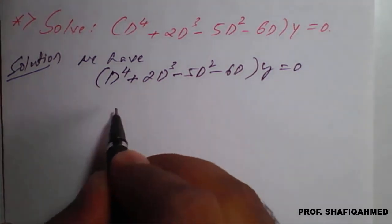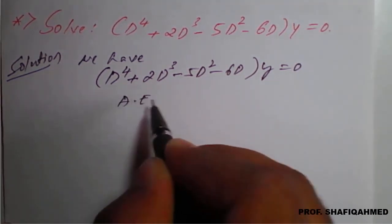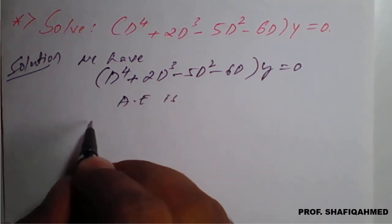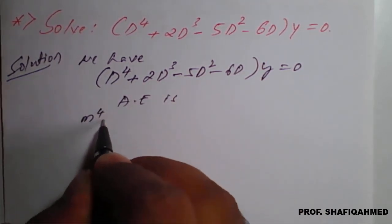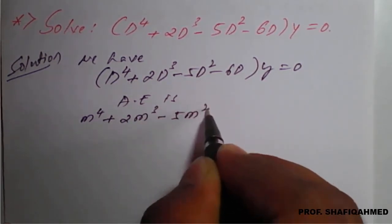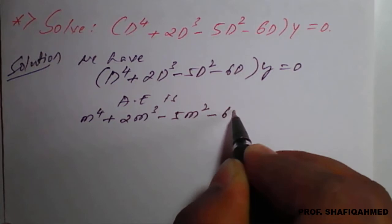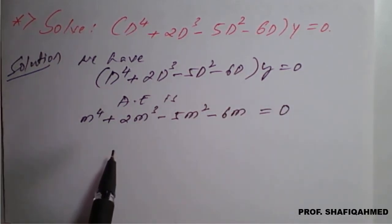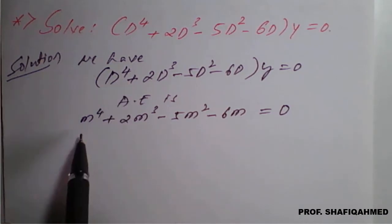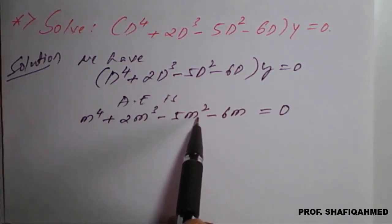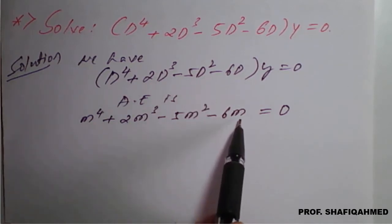Write in terms of m: m⁴ + 2m³ - 5m² - 6m equal to 0.